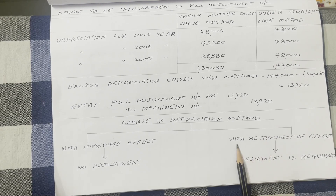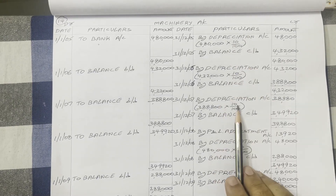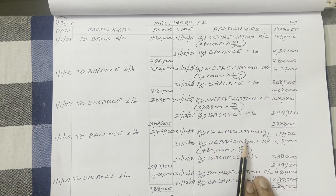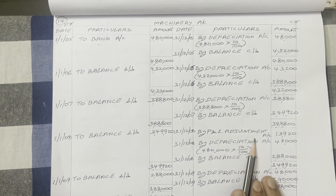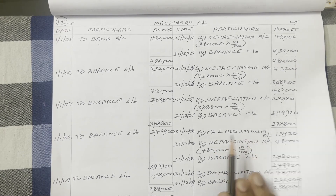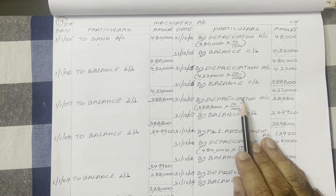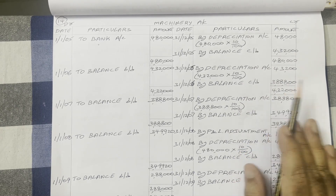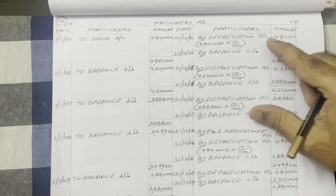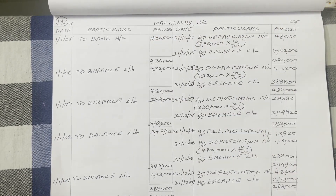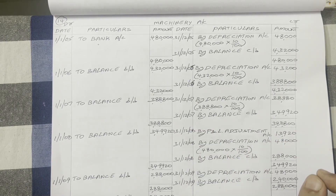The other method is: with retrospective effect. What is the meaning of this? For the first three years they provided depreciation under the written down value method. In the 4th year they want to change to straight line method. Under straight line method, from 2008 we have to provide depreciation — not only that, for the first three years also, as per the fixed installment method, we have to calculate depreciation again. We compare the three-year depreciation under fixed installment method with three-year depreciation under written down value method, and that difference we have to adjust in the books.